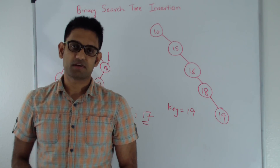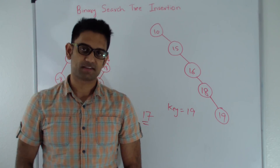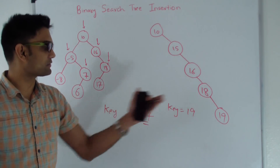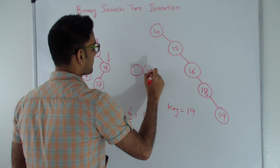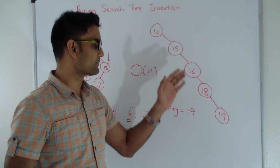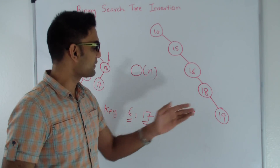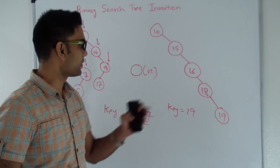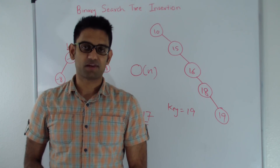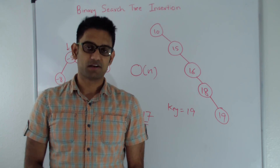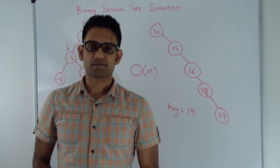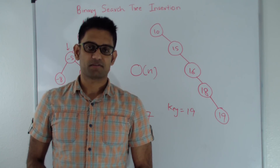How much time does it take to insert into a binary search tree? In the worst case, the time is O(n). It's possible that all the nodes have just one child and they are linear, and the worst case here will be O(n). If the tree was a balanced tree like an AVL tree, the worst case to insert is O(log n). Next, let's look at the code for inserting into a binary search tree.